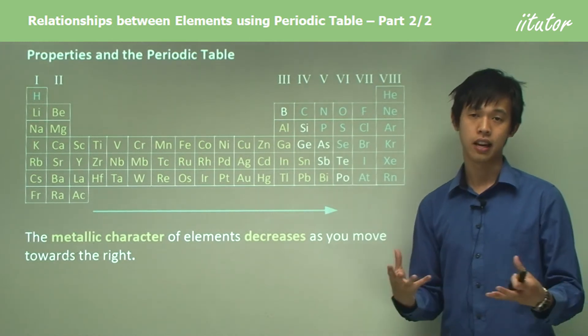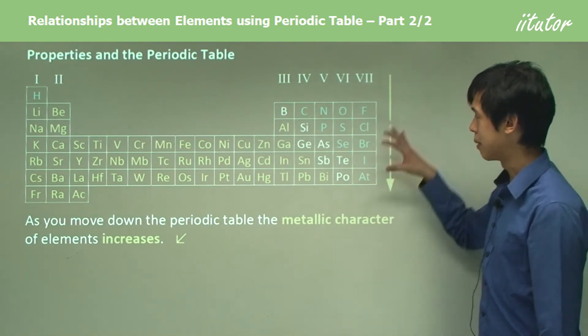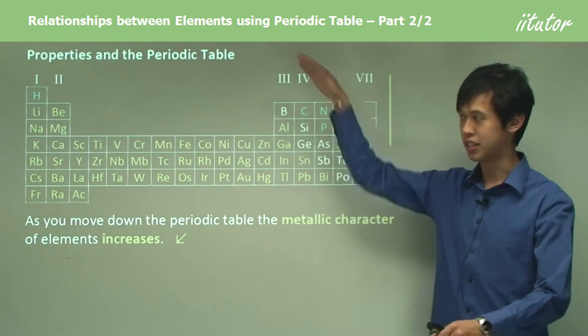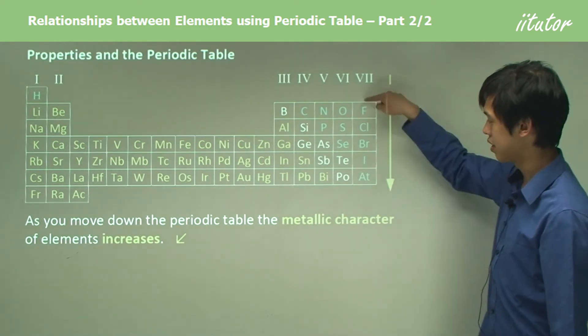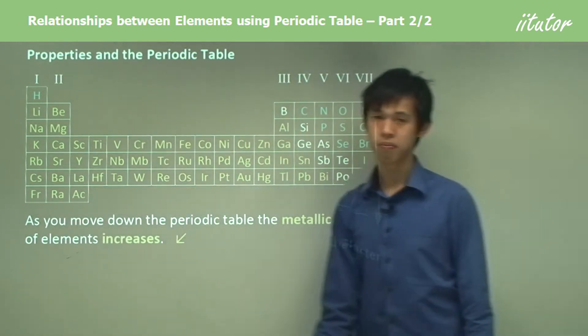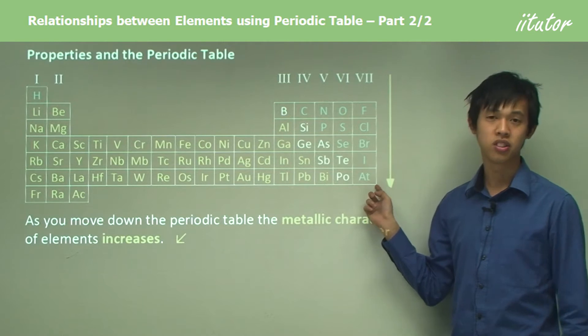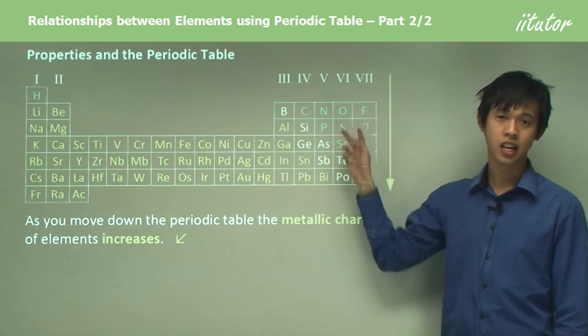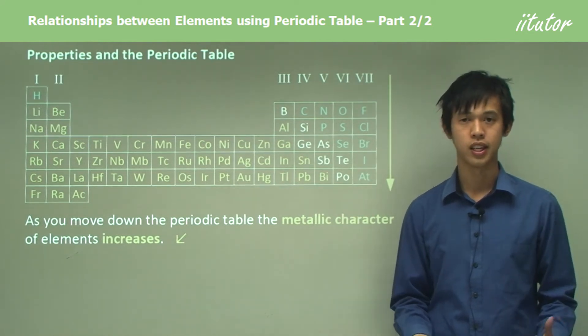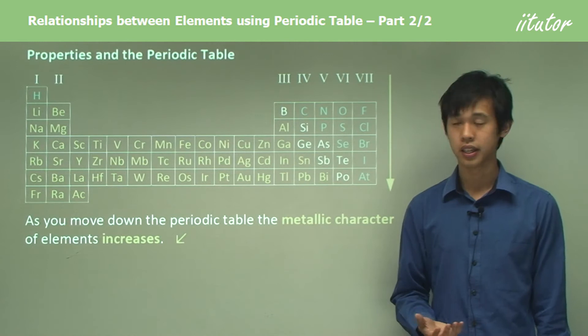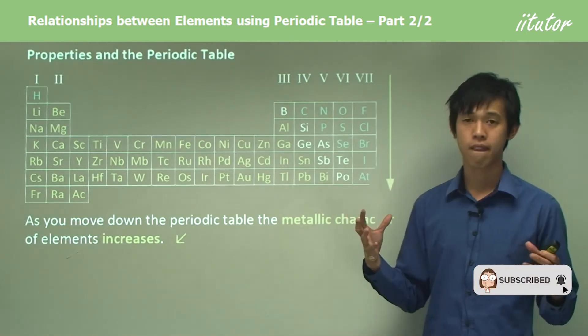Then there's this transitional period here, these white elements which are the semi-metals, and they sort of bridge the gap between metals and non-metals. As you move down the periodic table or down the groups, the metallic character of elements tends to increase. Down this bottom, chemicals will start to look more like a metal than this top one, and that's just because of the way the electrons are structured, which we'll talk about in future lessons.